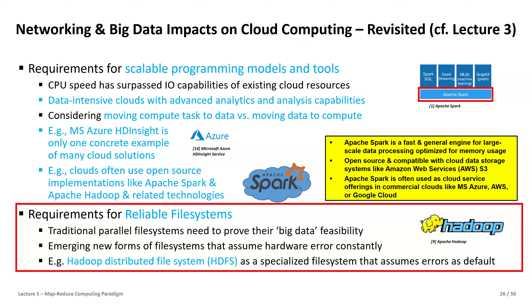Looking back at Spark, it also had the idea of a reliable file system. This is enabled by several factors that support fault tolerance, which assumes errors will occur all the time. We need a specialized file system that treats these errors as default. The design led to the Hadoop Distributed File System, implemented in the Apache Hadoop framework, which works well together with MapReduce. This distributed file system is now broadly used even with Spark and many other open source tools, making it an important technology.